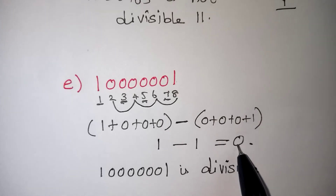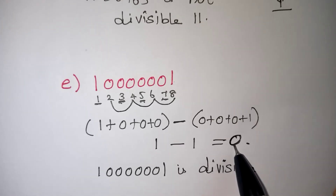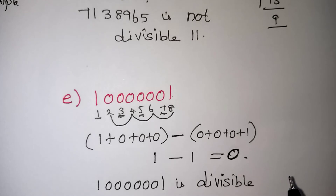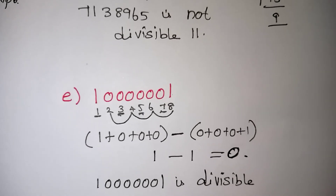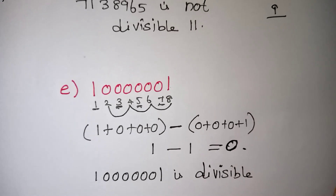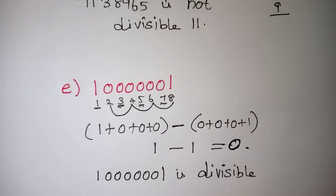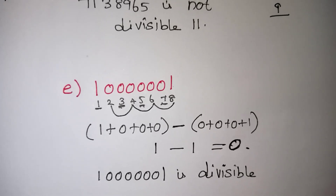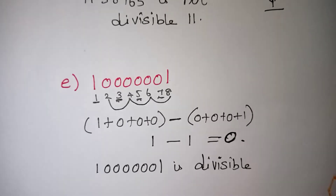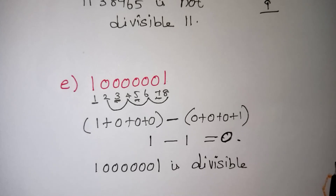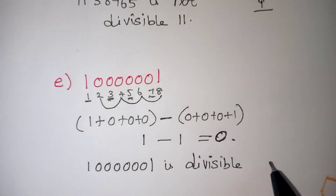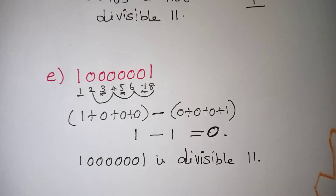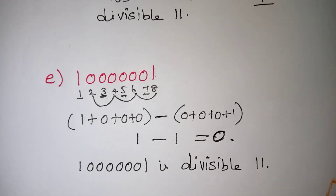So, only the subtraction value decides the factor. If it is 0 or a multiple of 11, that number will come in the 11 times table. Multiples of 11 include 11, 22, 33, 44, and even negative values like minus 11 or minus 22 also count. If you are getting 0 or a multiple of 11, it is divisible by 11. Thank you for watching — please subscribe our channel for more videos.